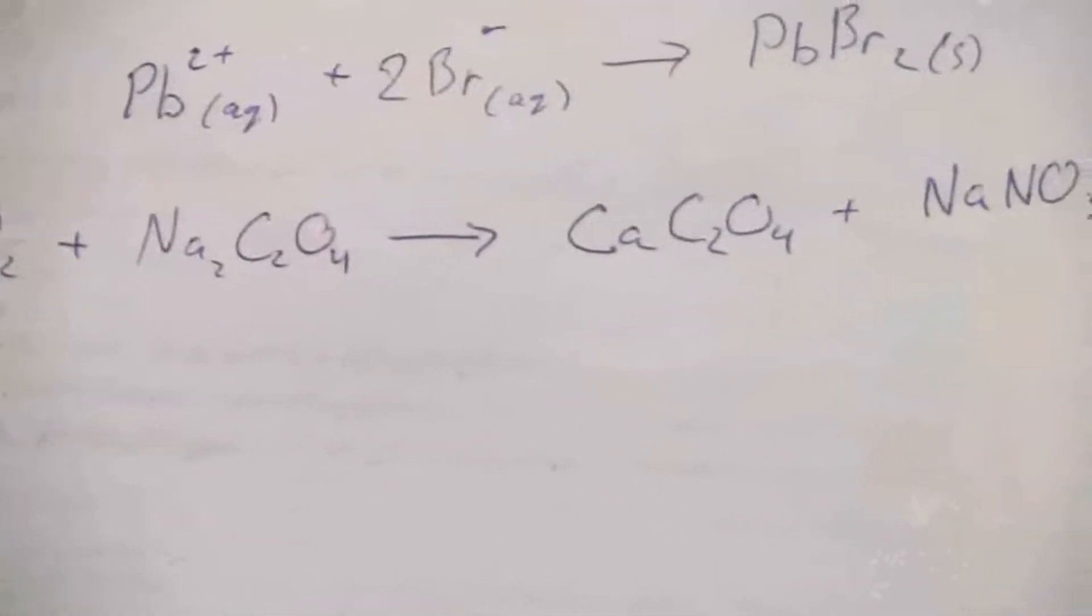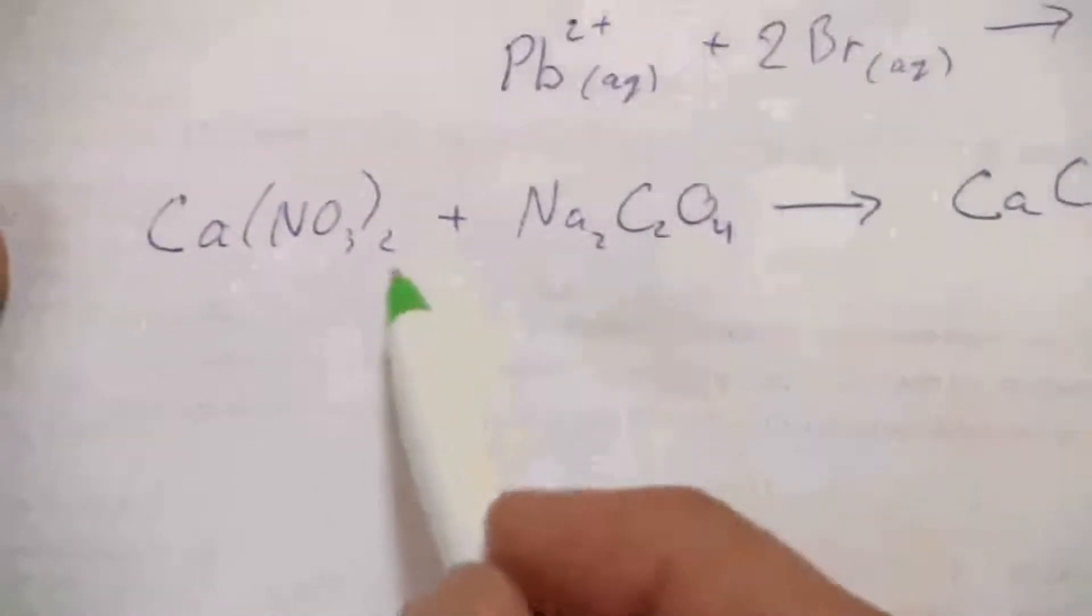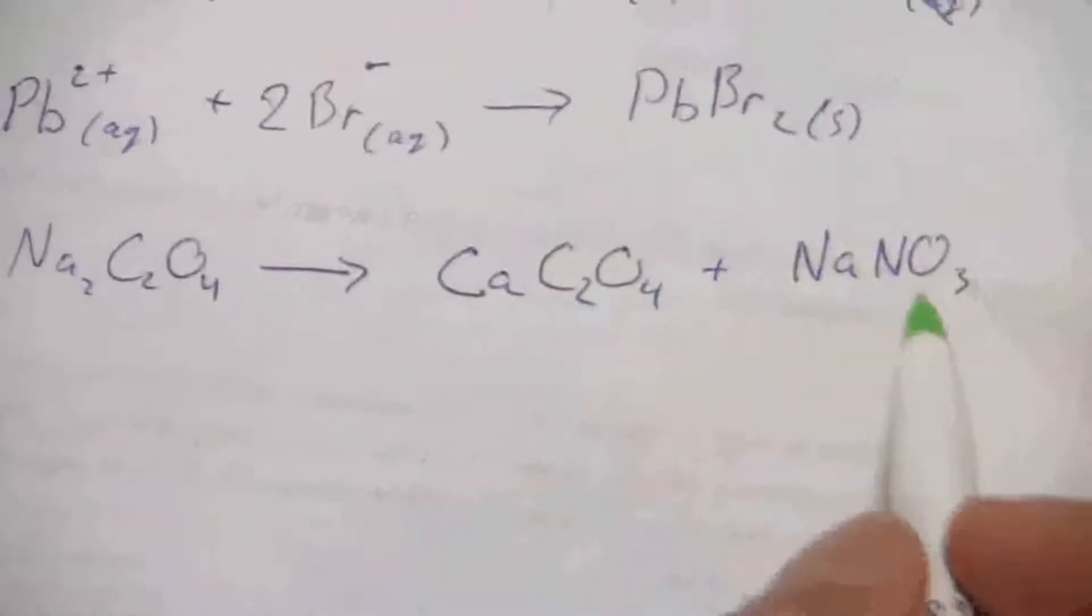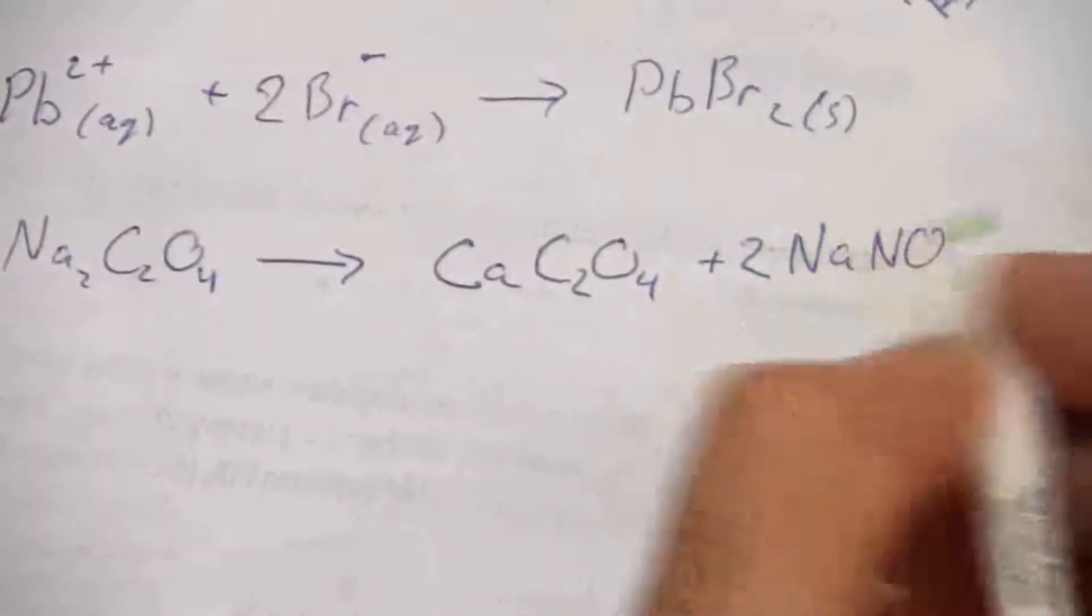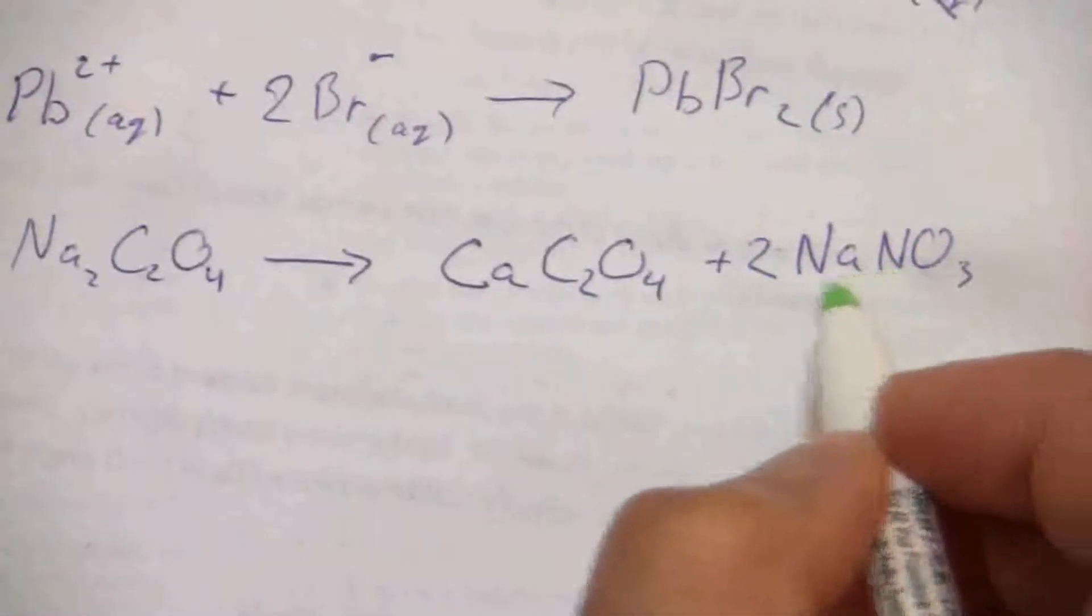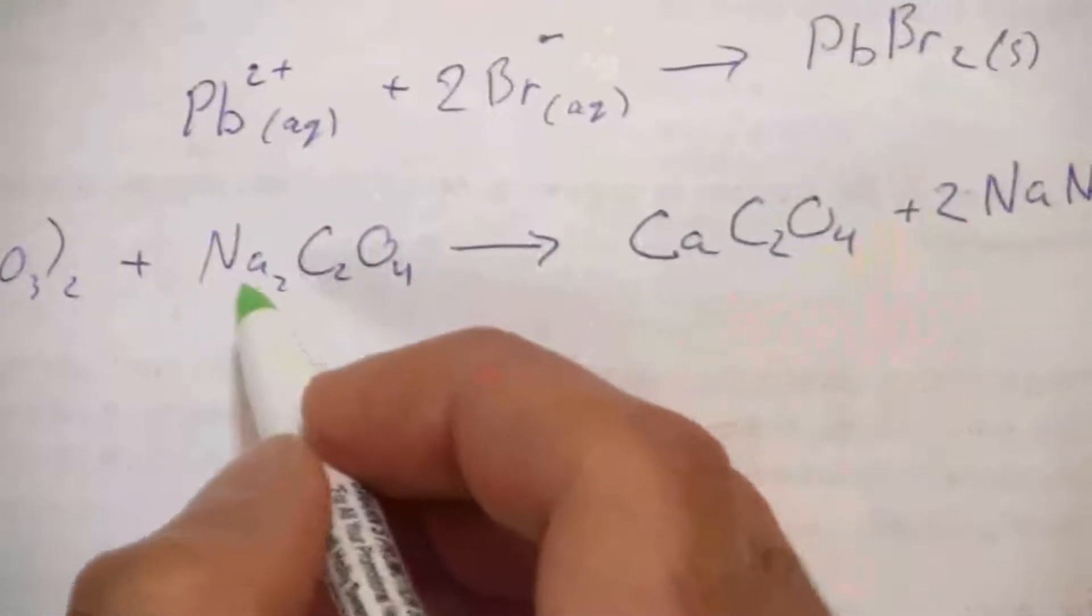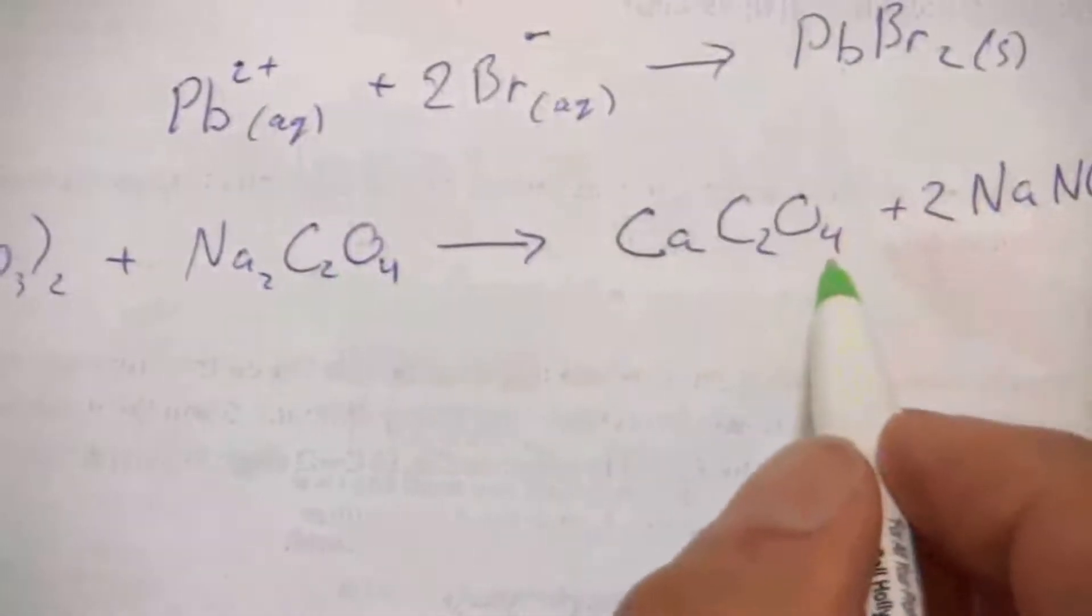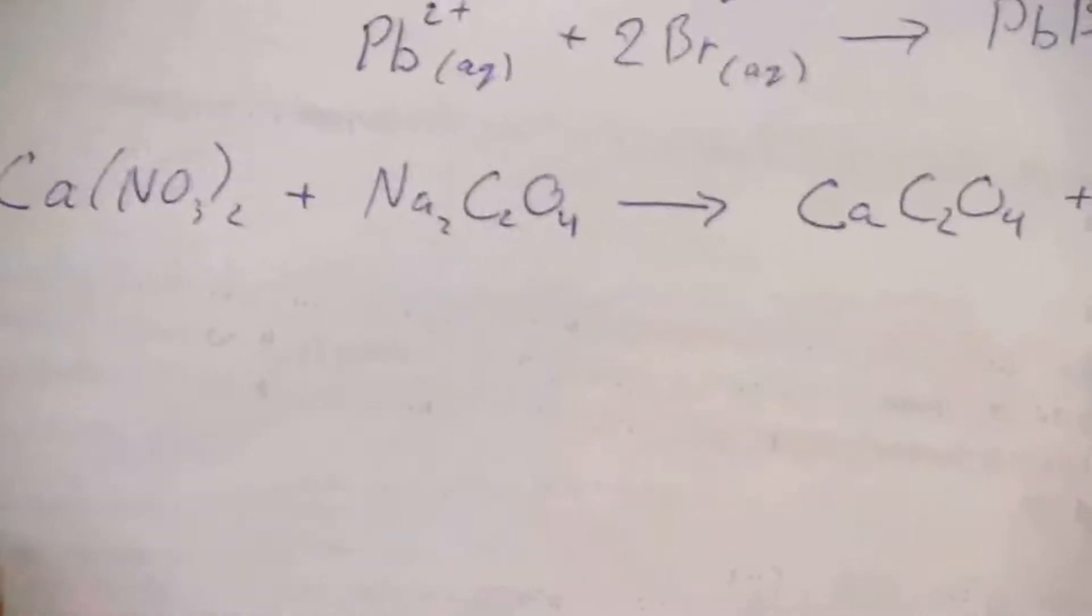We've got our equation there. Now let's balance it. You'll see we have two nitrate over there, only one here, so I need two of these formula units. That will give me my two nitrate. At the same time it gives me two sodium ions and there they are. I have my two sodium ions to verify. I have the one oxalate ion and the one calcium ion.